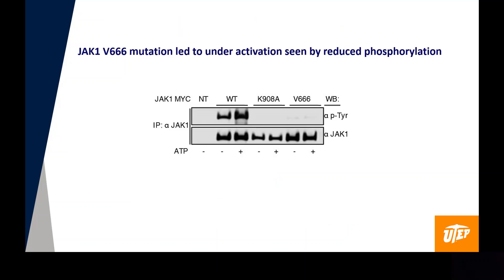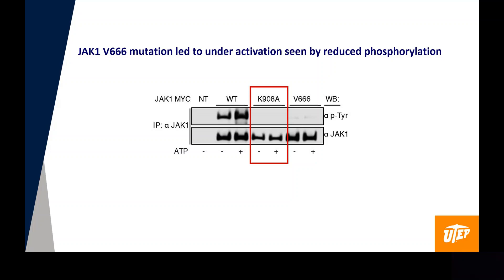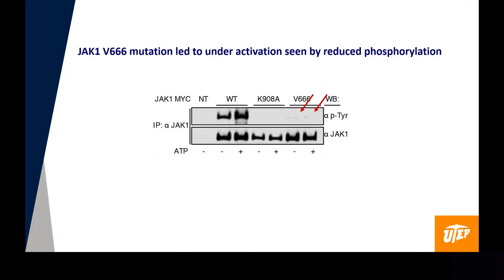To start the characterization of these mutations, kinase assays were done to assess the auto-activation. Total cell lysates were collected from transfections of non-transfected cells, wild type, kinase dead — a lysine to alanine mutant serving as our control — and our novel mutation B666. The results using ATP to assess activation showed that the JAK1 B666 mutation led to underactivation, seen by reduced phosphorylation.